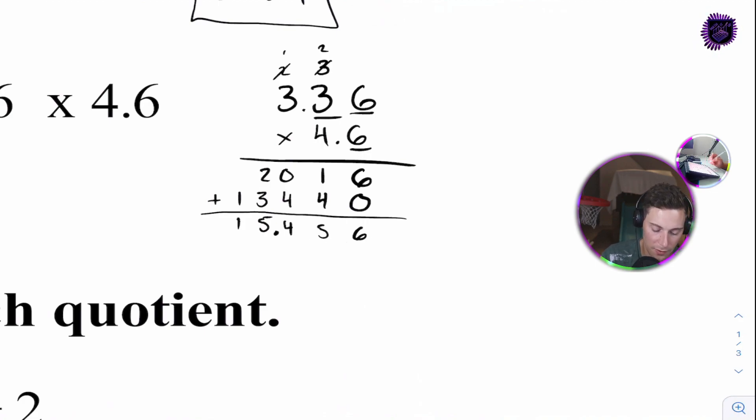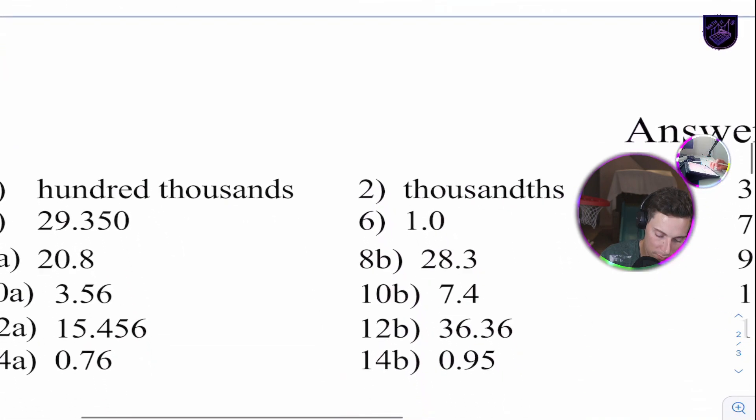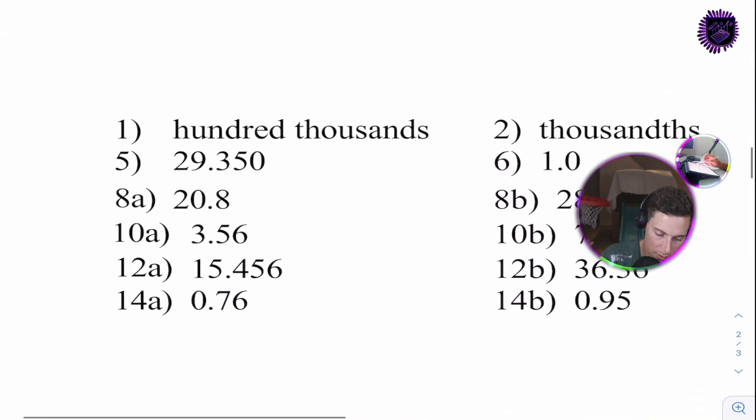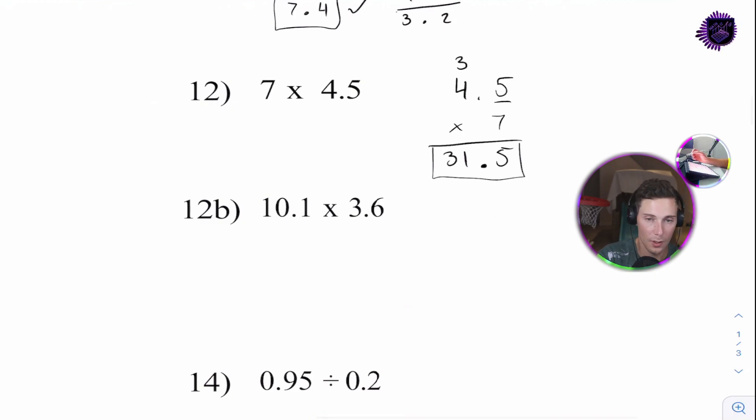How many decimals? 1, 1. 3 decimals. So, from here. 1. 3. 1 place. 2 place. 3 places over. Let's get rid of all those. And, we'll write our answer. 15. 15. 5. 5. 6. We're going to box it. And, we're going to check it. 12. A. There it is. 15. 4. 5. 6.